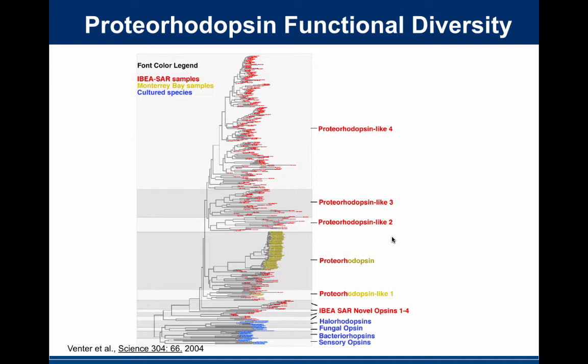Proteorhodopsin is a light-mediated proton pump — that was the one Ed DeLong discovered, and it's homologous to genes from the halophilic archaea I had been working on. Many halophilic archaea have homologues: one is a light-mediated chloride pump, one is a sensory molecule — they have a bunch of different functions. We scanned through the proteorhodopsin data and found an incredible diversity of sequences, likely corresponding to many different sub-families. At the time we had no idea what the functions of these were, but they showed up in different clades across the evolutionary tree, suggesting they could have different functions from each other.